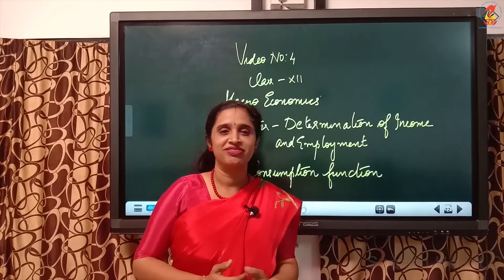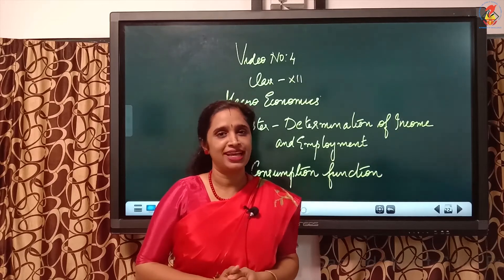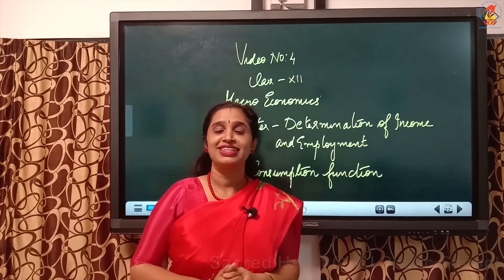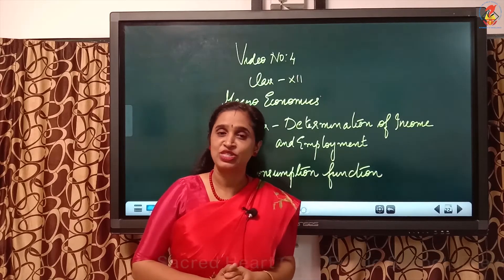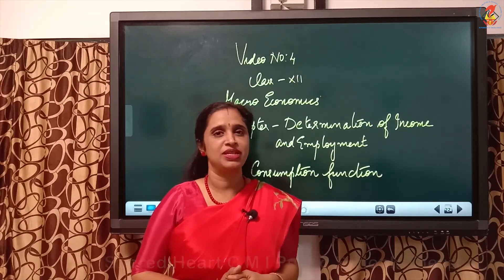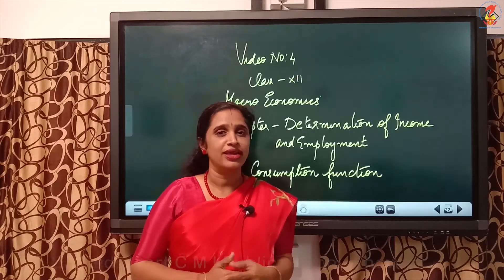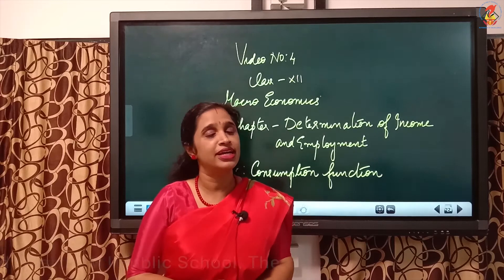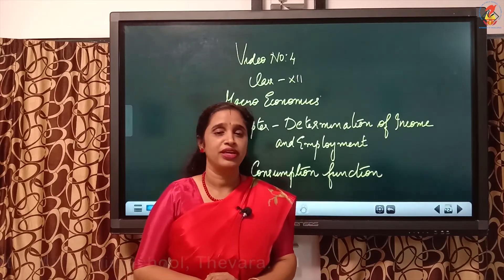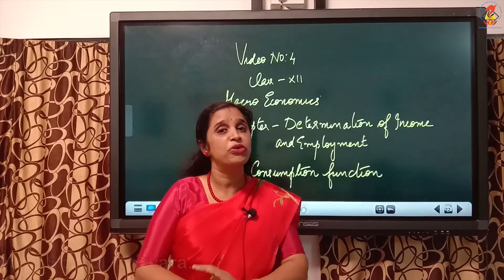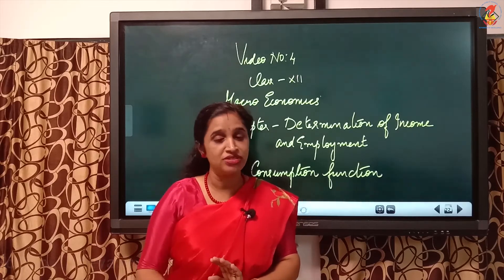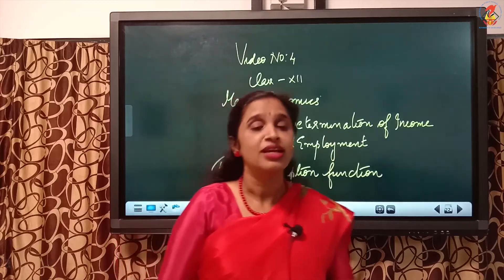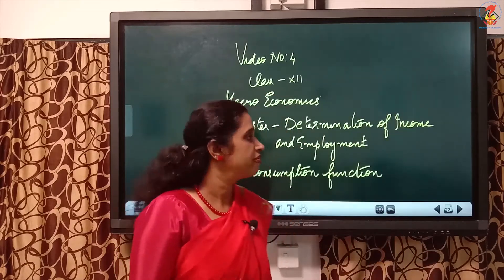Dear children, we finished with the components of aggregate demand and aggregate supply. AD is equal to C plus I, and AS is equal to C plus S, or Y is equal to C plus S. So the components like consumption, saving, and investment are included in aggregate demand and aggregate supply. Now we are going to learn all these components in detail. Today's topic is the consumption function.